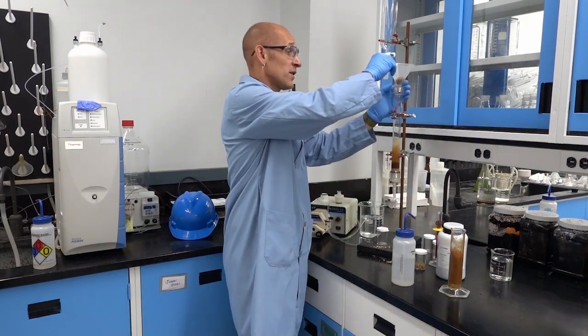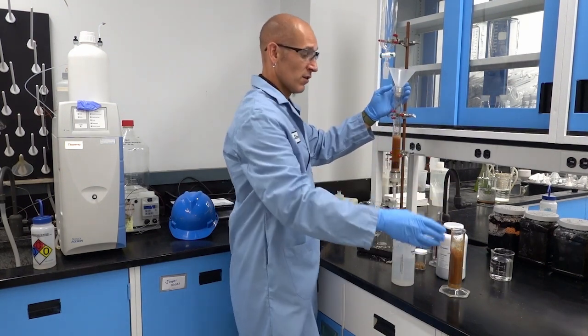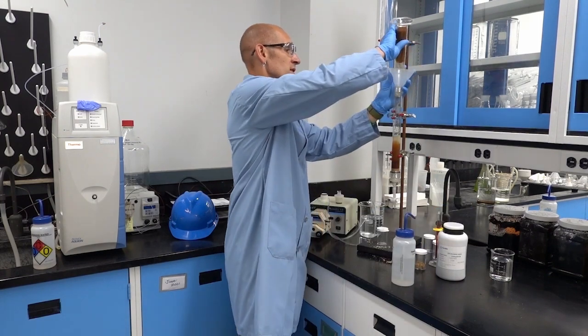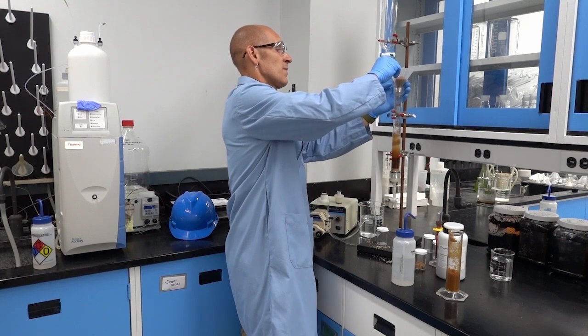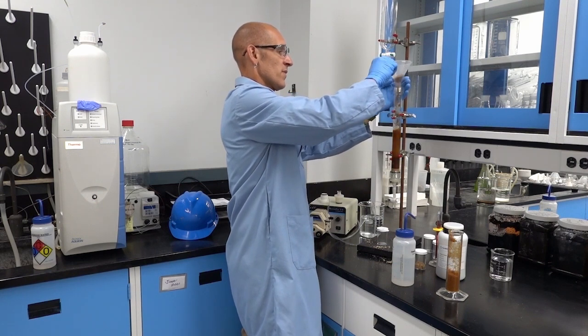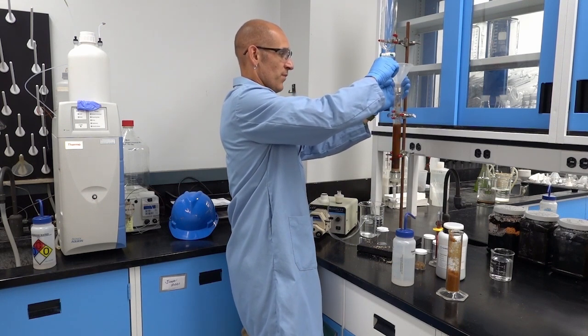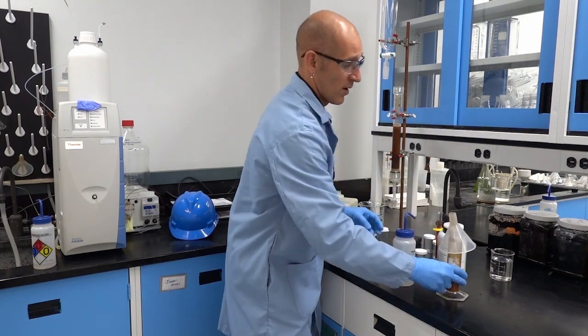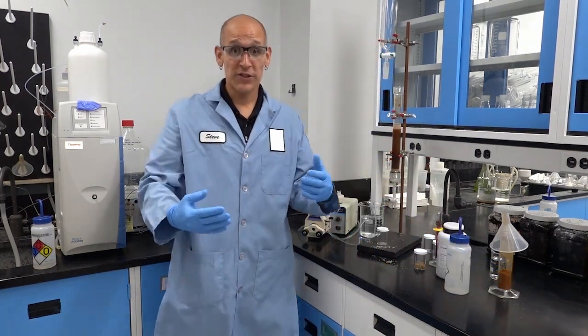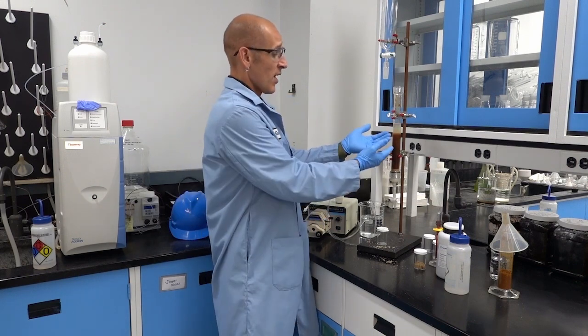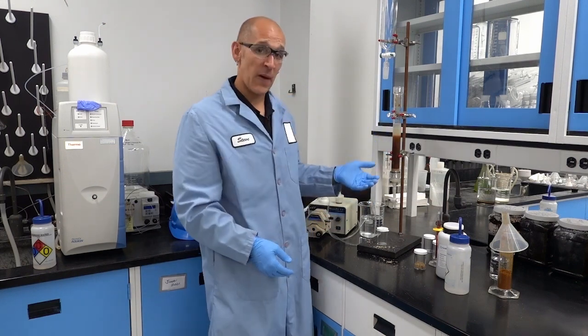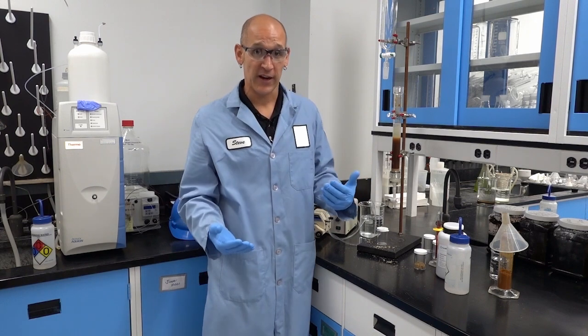For most experiments on a small lab scale, you want to target approximately 12 inches of bed depth. Twelve inches of resin allows for the solution to be treated to have a large enough path length of resin to remove the target analyte.